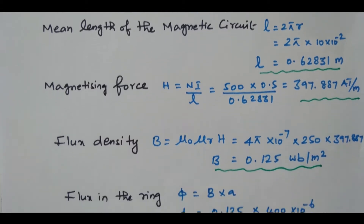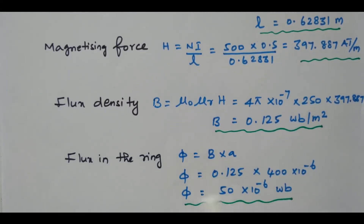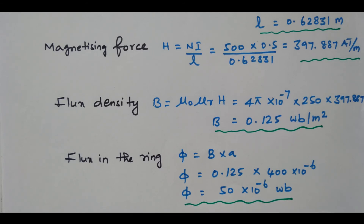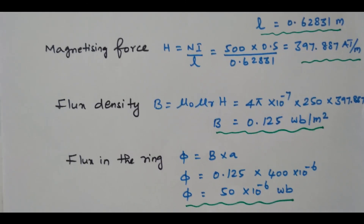From the flux density we can find the flux: φ = B × A = 0.125 × 400 × 10⁻⁶ = 50 × 10⁻⁶ Weber, or 50 micro Weber. We have now calculated the flux in the ring. More problems are available; the link is given in the description box. Subscribe to the channel for more videos. Thank you.